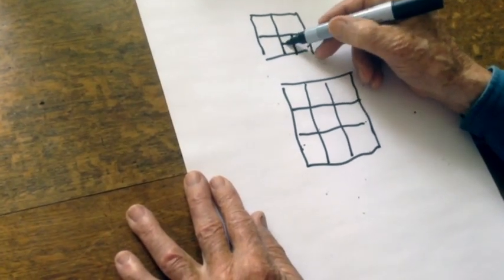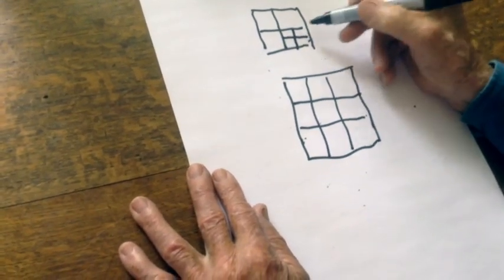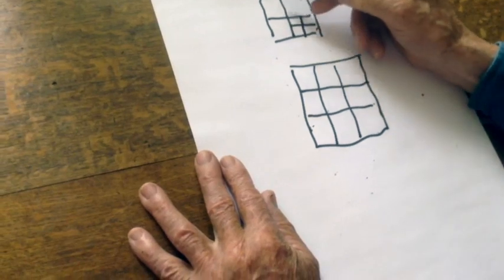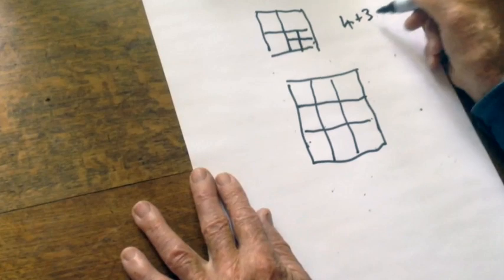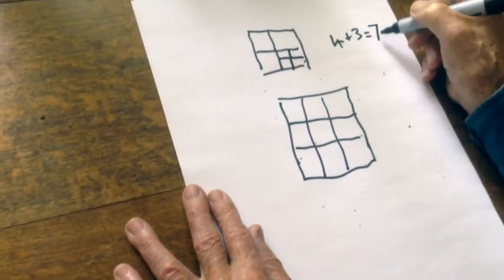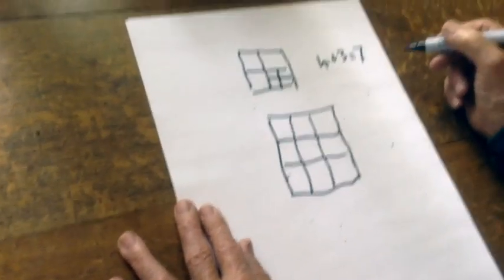If we take this one and divide it there, I've got four little squares and three big squares. So I've got four plus three equals seven. I divided that square into seven squares.